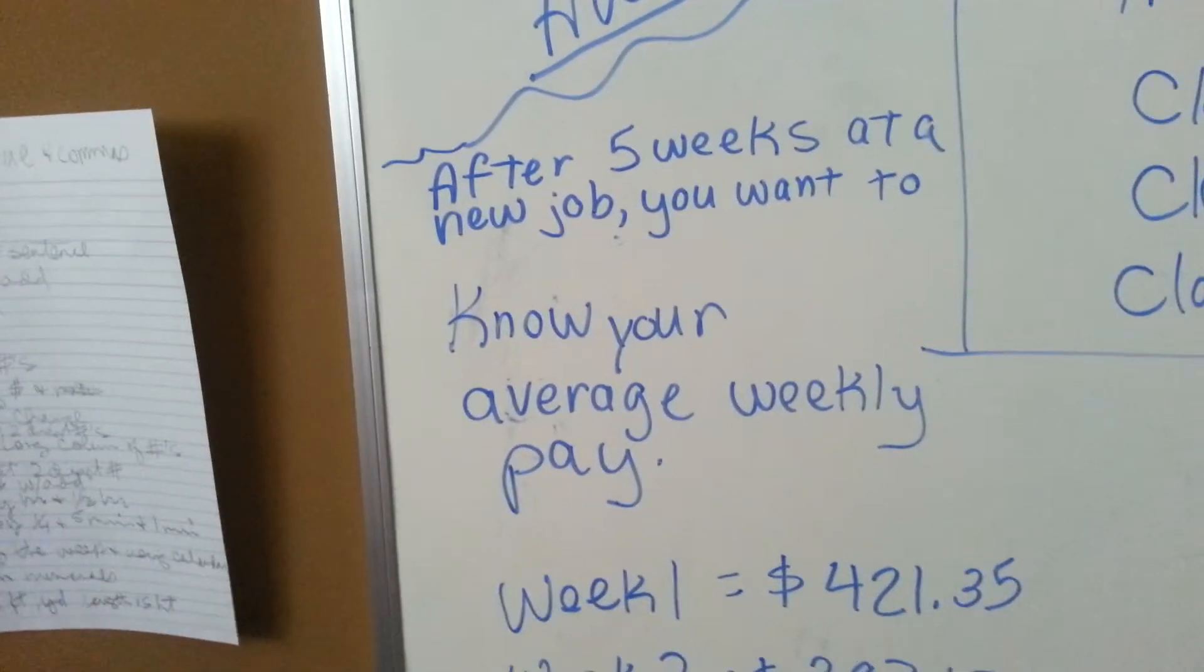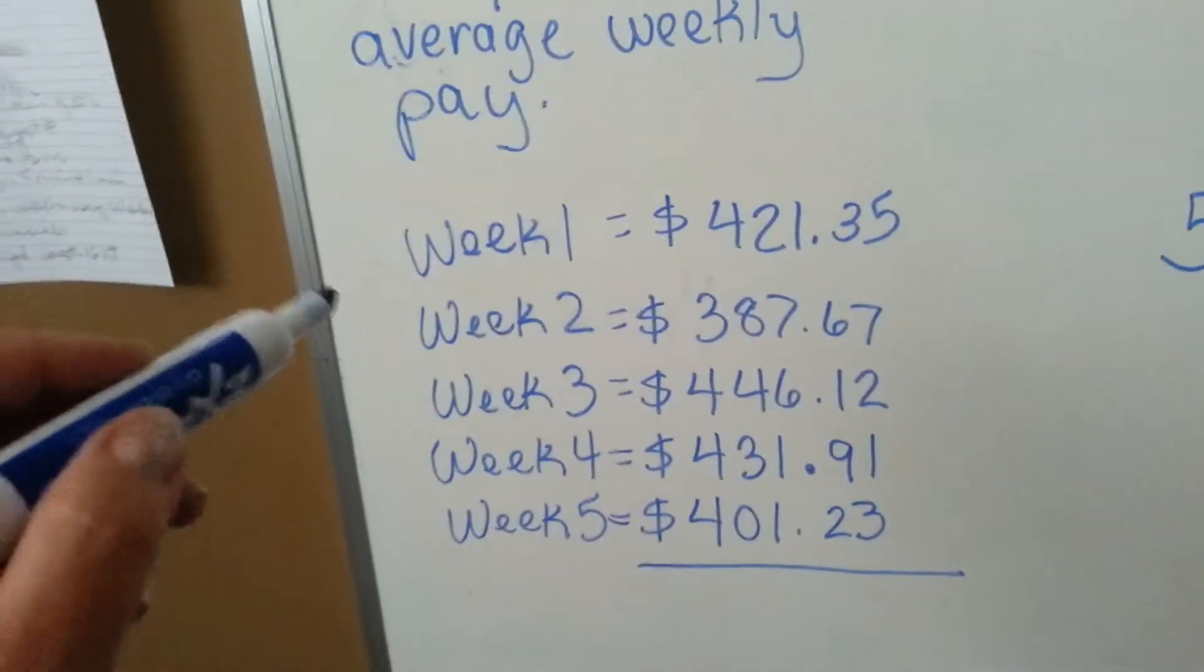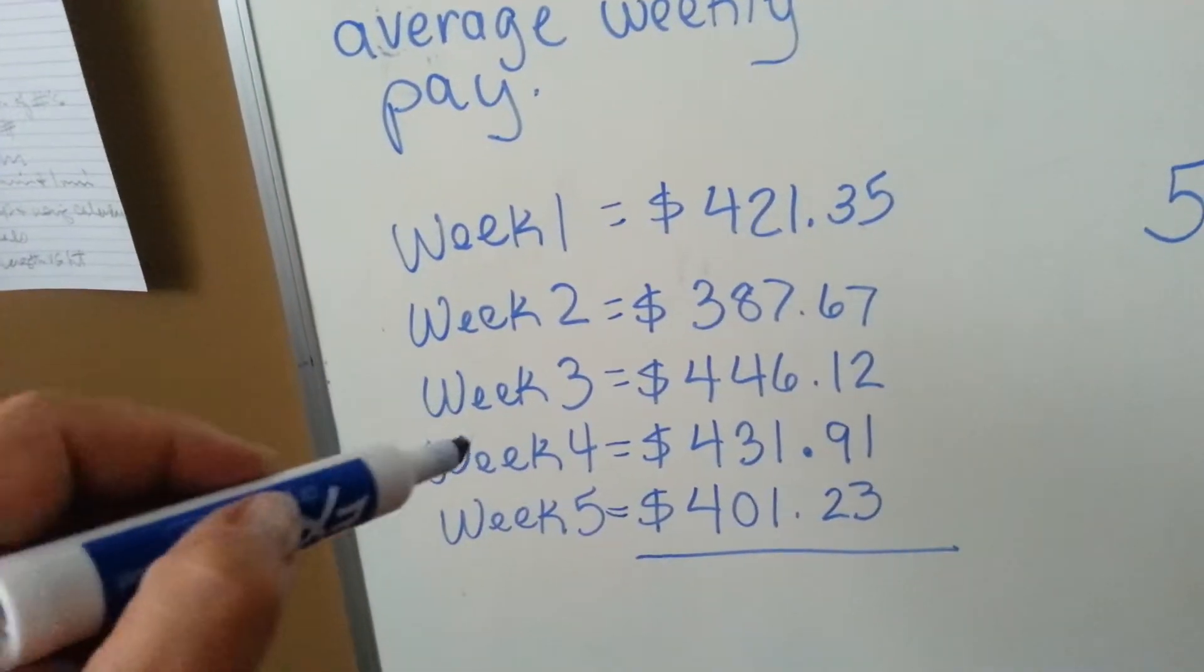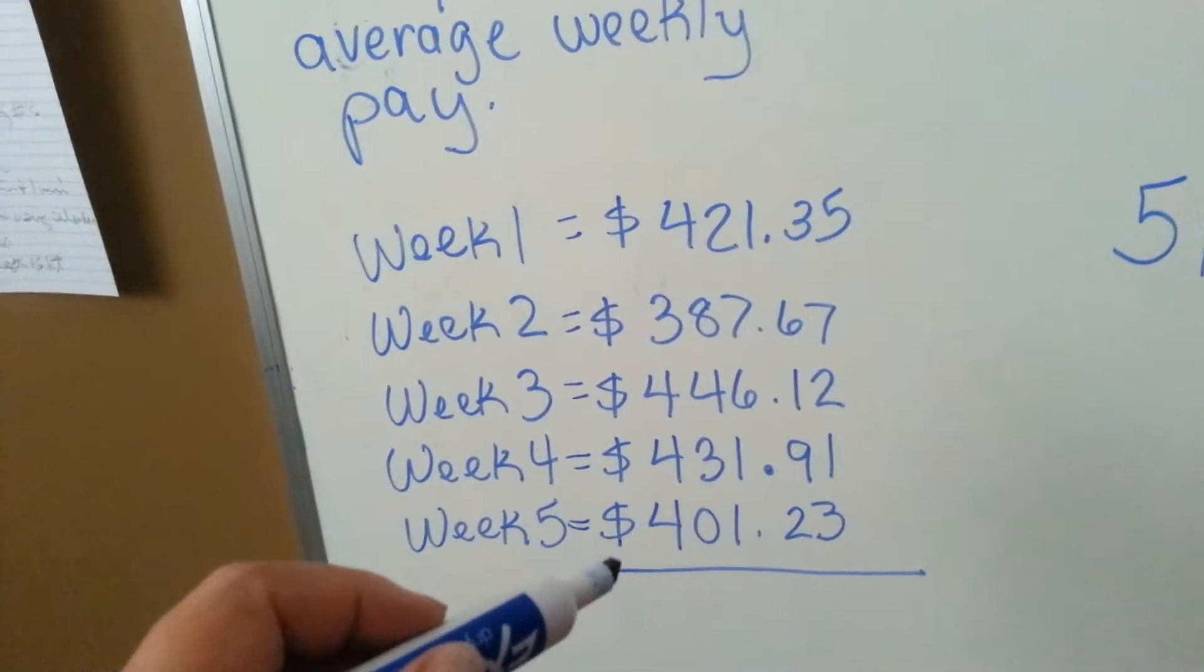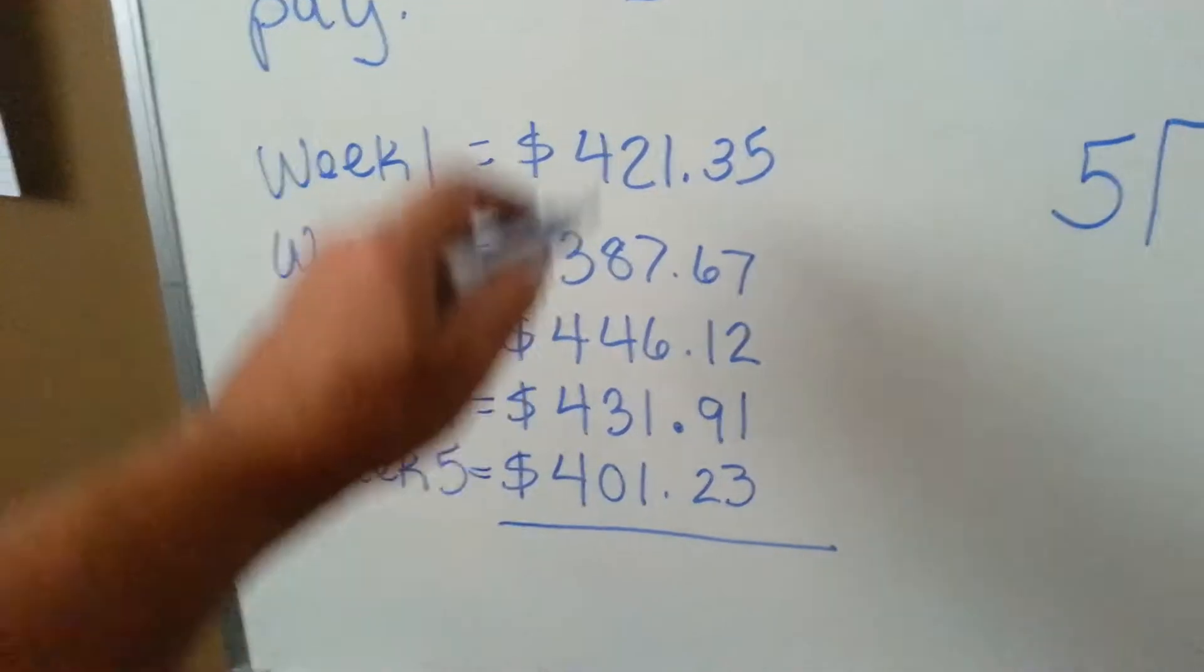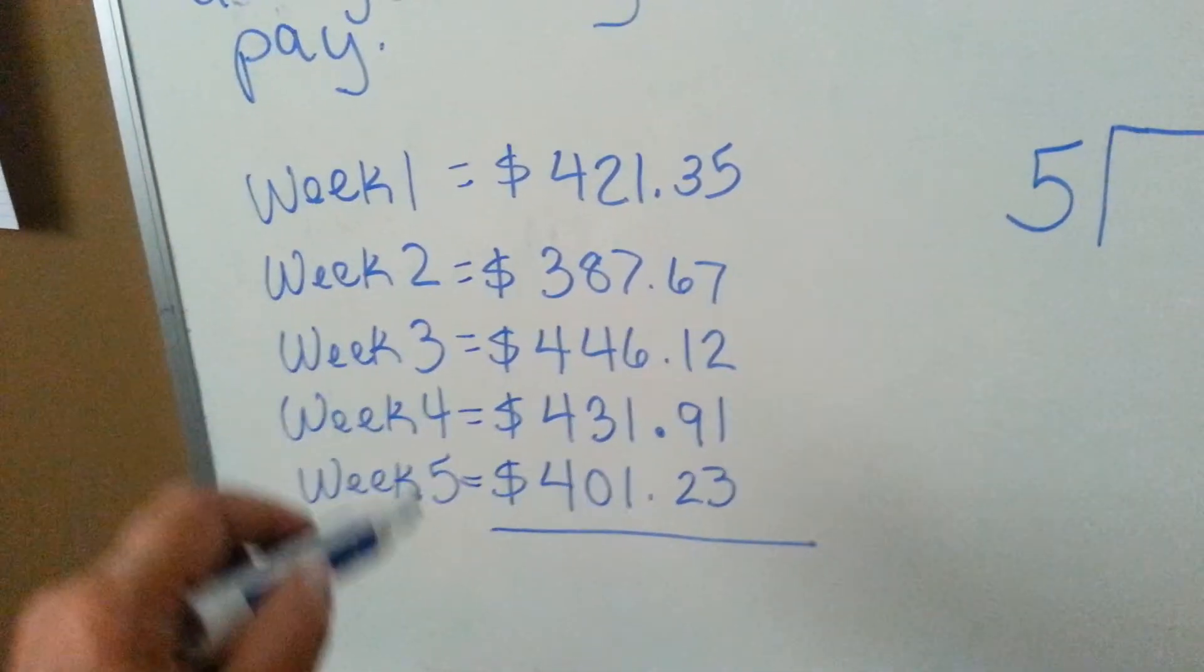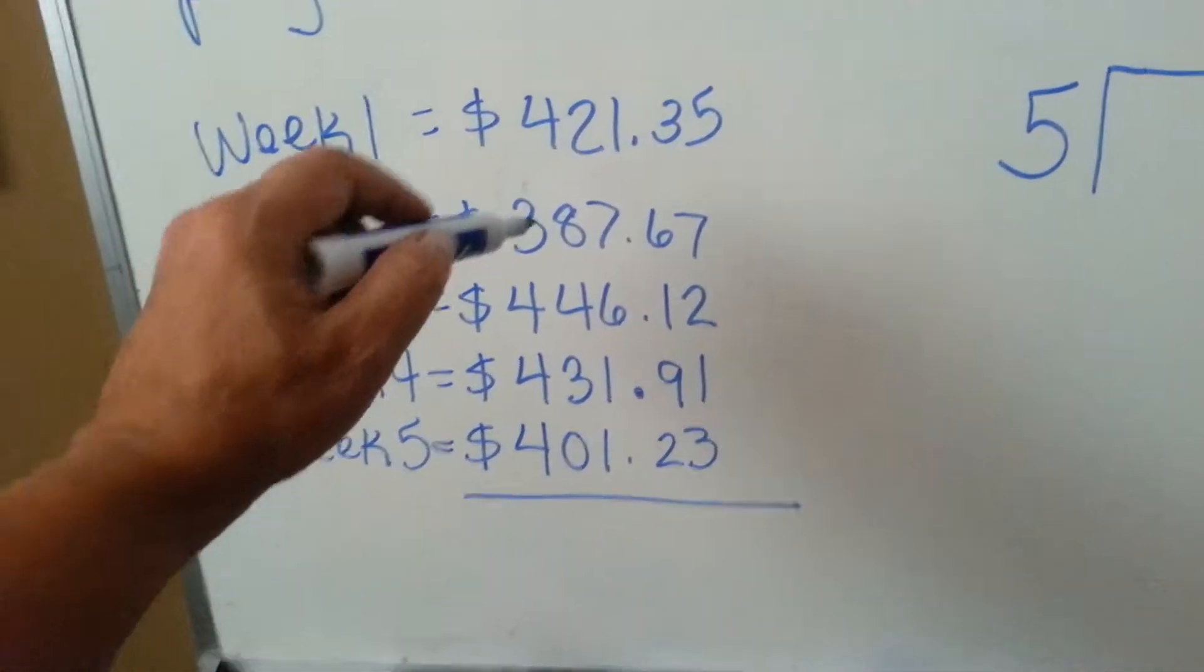After five weeks at a new job, you want to know what your average weekly pay is. So, here's your paychecks, week 1, 2, 3, 4, and 5. And this is how much you made each paycheck. So what we would do is, we would add these five up, and because there's five, we're going to take the total and divide it by five. So let's see what we have here.